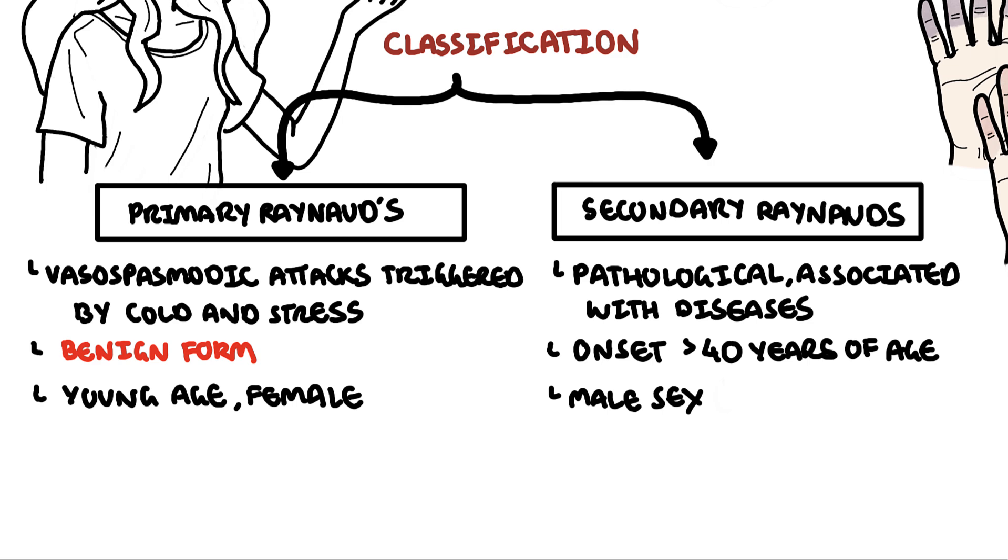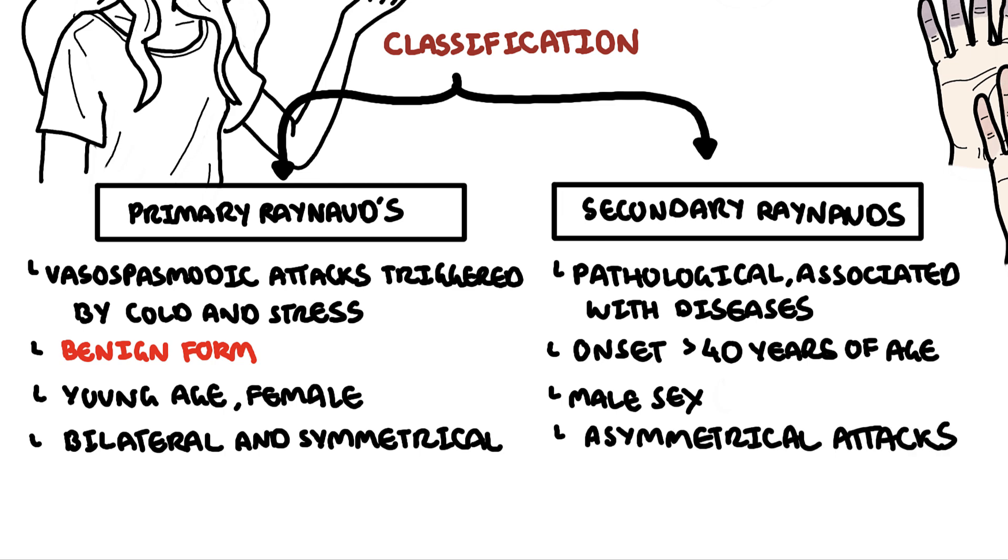The other difference between primary and secondary Raynaud's is that primary is usually bilateral, meaning it affects both hands or feet, and often symmetrical in color change. Whereas secondary Raynaud's, the discoloration can occur in random fingers or digits in any amount of digits.